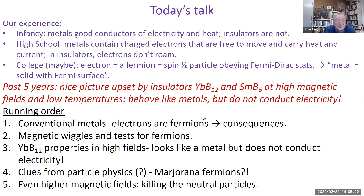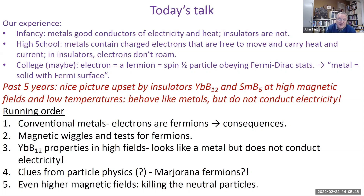Here's my running order. First I'll say something about conventional metals, electrons as fermions, and the consequences. I'll show you magnetic wiggles and the tests for fermions they provide. Then I'll describe the strange properties of ytterbium dodecaboride in high fields — it looks like a metal but doesn't conduct electricity. We'll stray into clues from possible particle physics particles, Majorana fermions. And at the end, if there's time, I'll tell you how we kill these neutral particles using high magnetic fields.